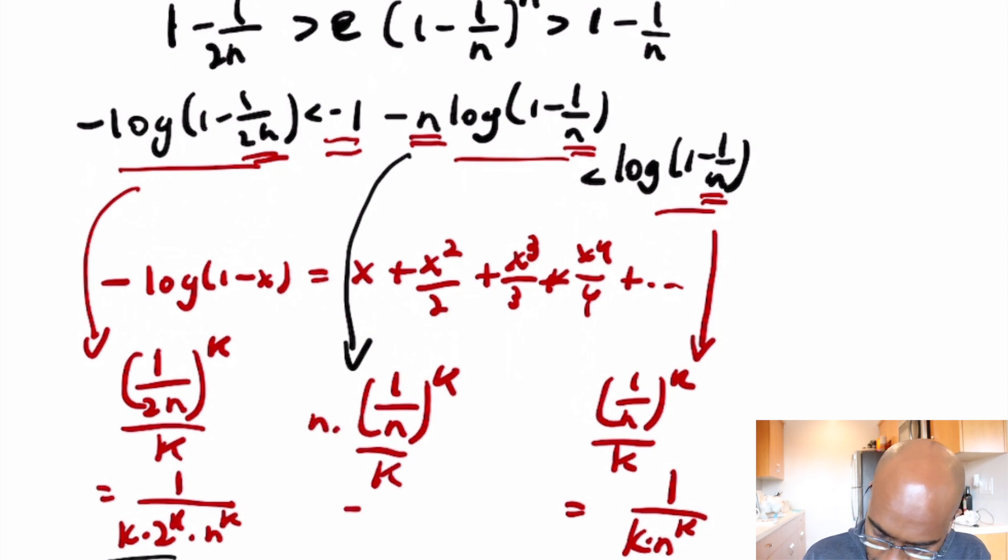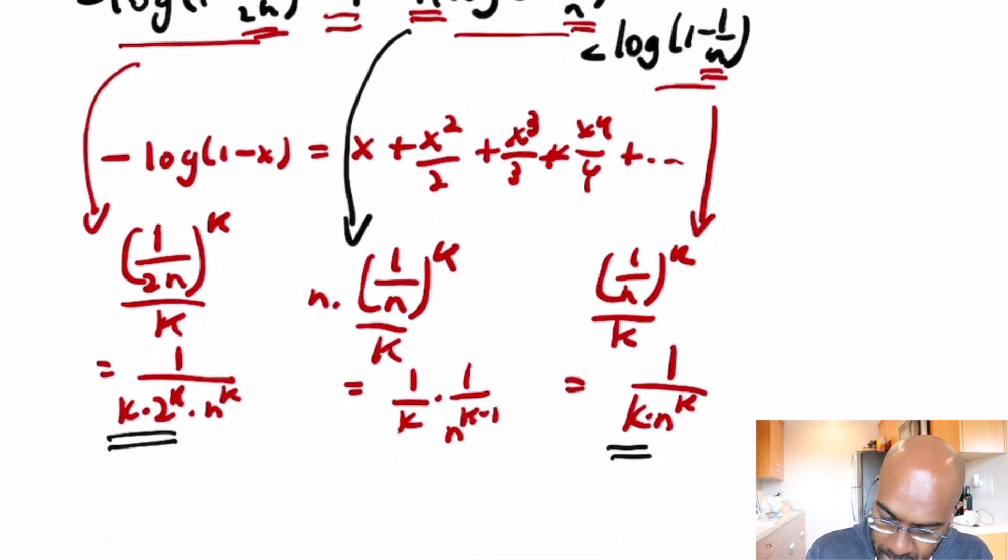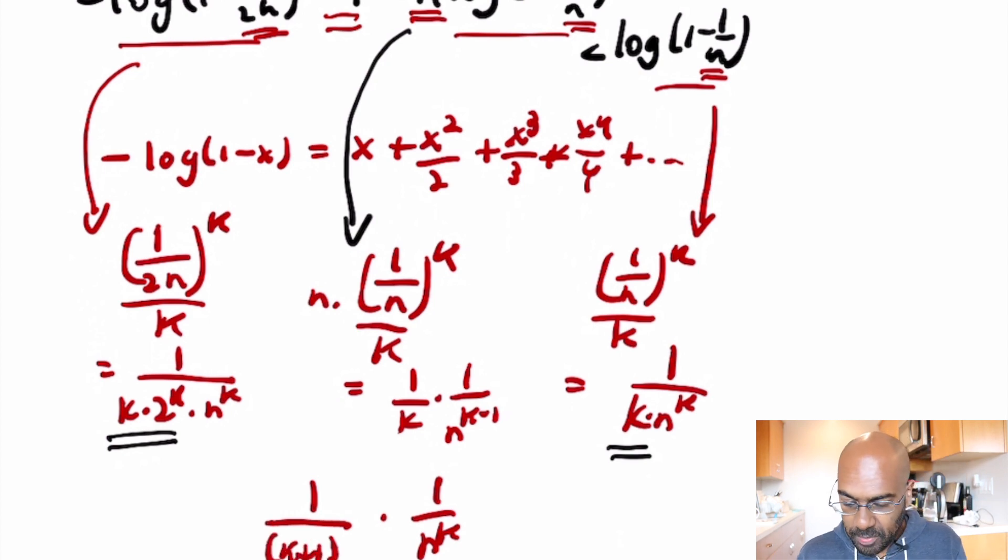So we get 1 over n to the k over k, but then we have this contribution of this n, so we'll get 1 over k times 1 over n to the k minus 1. This actually means that in the expression for this series, the 1 over n to the k term is going to have a 1 over k plus 1 beside it in the denominator by shifting the index.